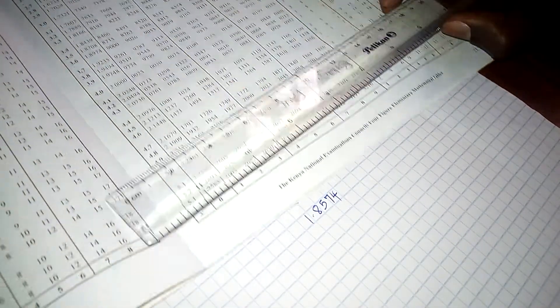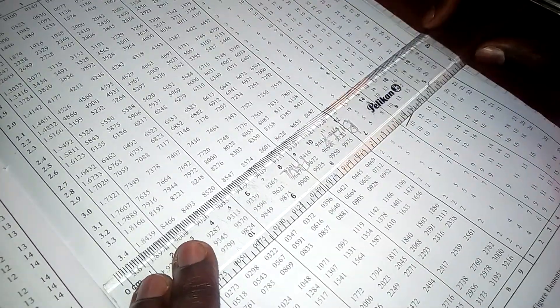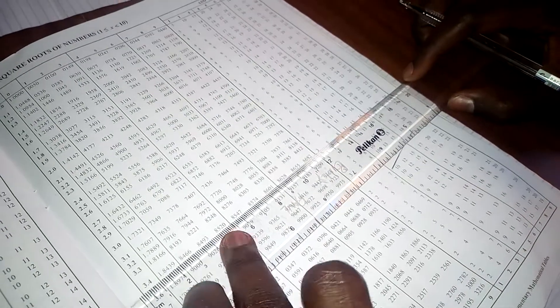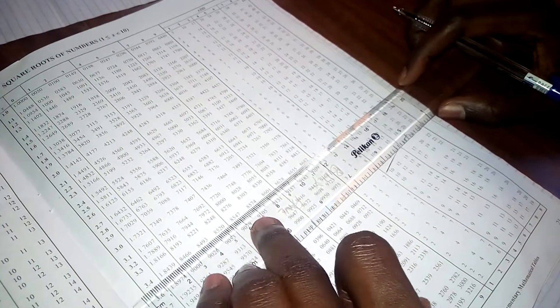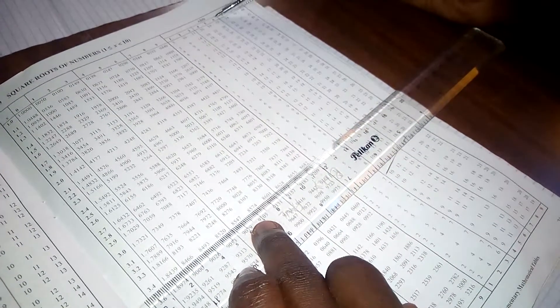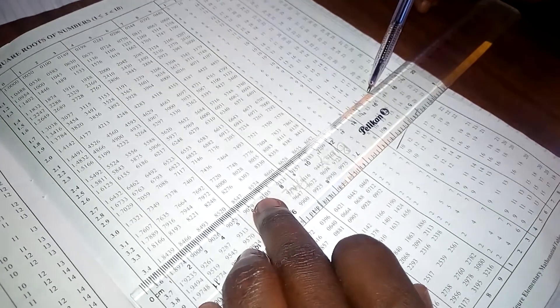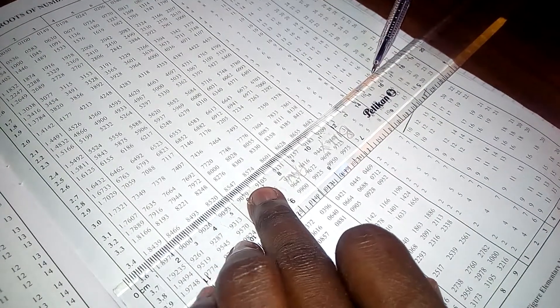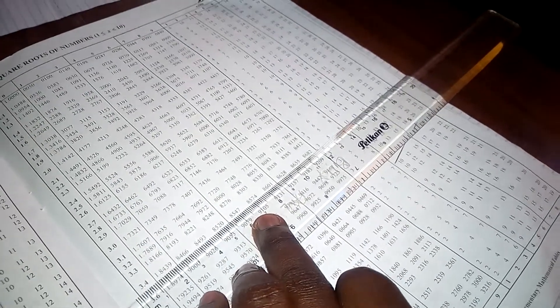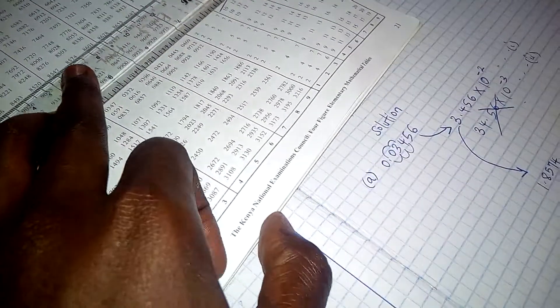So we are going to have 1.8574. Then that is just 3.45. But we wanted 3.456. We wanted to get the square root of 3.456. So we look at where 6 lies. So the value that coincides at that particular point is 16. And the condition here is that we add. So we are going to add 16.